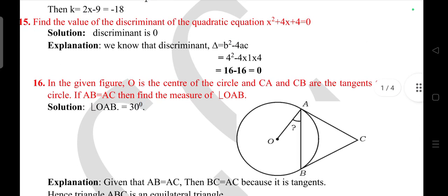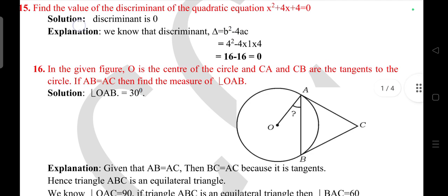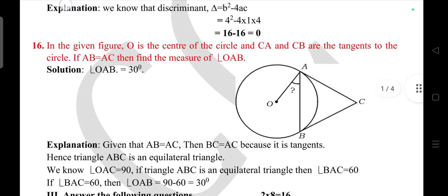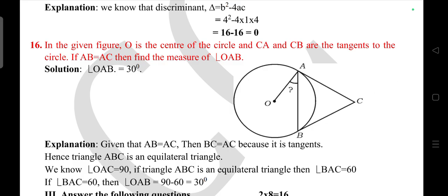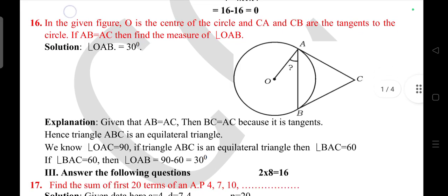Question 16: In the given figure, O is the center of a circle, CA and CB are the tangents to the circle. If AB = AC, find the measure of angle OAB.